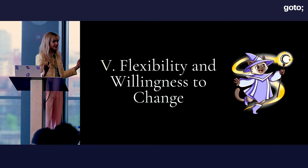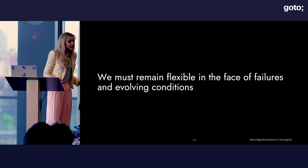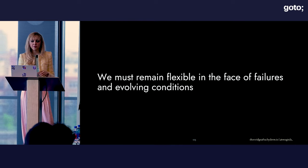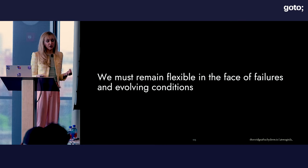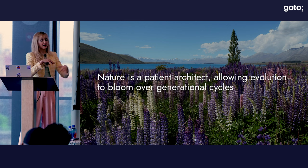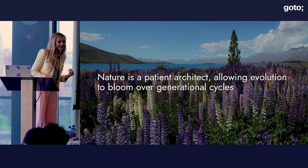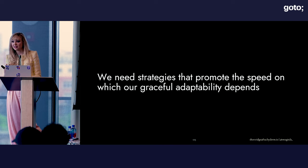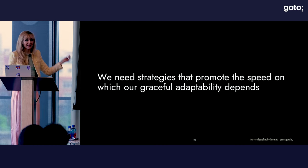That brings us to our final ingredient — the squishy marshmallow: flexibility and willingness to change. We want to remain flexible in the face of failures and evolving conditions that would otherwise disrupt our success. As Martin Kleppmann puts it, agility in product and process means you also need the freedom to change your mind about the structure of your code and your data. Nature is a very patient architect, allowing evolution to bloom over generational cycles — we need to be patient too, with carefully architected evolution. We need strategies that encourage this evolution and interweave willingness to change by design, promoting the speed on which adaptive capacity depends.